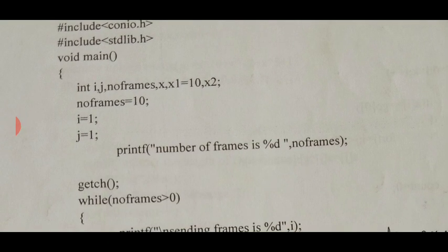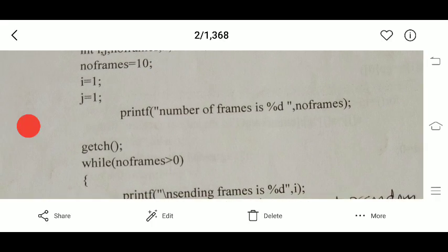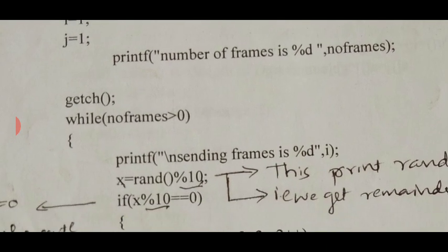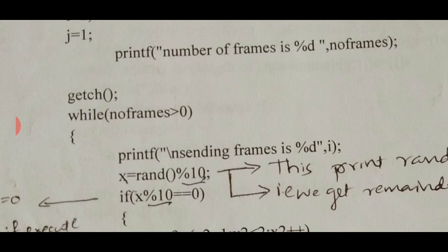We print the number of frames. We are sending a total of 10 frames, and for all these frames we want to get acknowledgement. We send the first frame, and as soon as we receive the acknowledgement for it, we send the next frame. Like this, we send all 10 frames one after another. We use a while loop with the condition that number_of_frames is greater than 0, printing 'Sending frame' for each iteration.